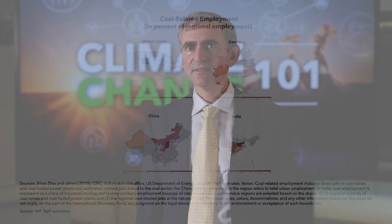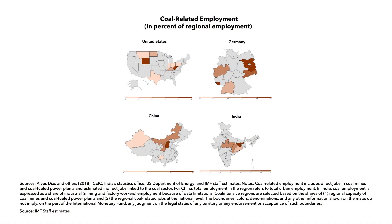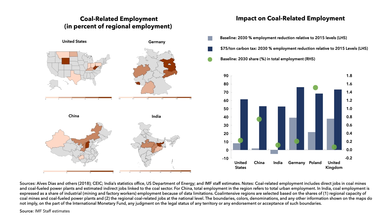Impacts on specific regions and groups of workers from mitigation policy generally occur regardless of the type of mitigation instrument. For example, the map shows that coal mining is a substantial fraction of local employment — 5 to 15% — in a handful of regions in the US, Germany, China and India. Under a $75 per tonne carbon price in 2030, coal mining employment would be between 50 and 70% lower than 2015 levels in the US, China, India, Germany, Poland and the UK, although in some of these cases there would be a large reduction in coal mining employment in the baseline even without carbon pricing.